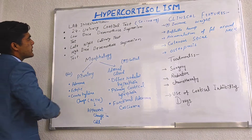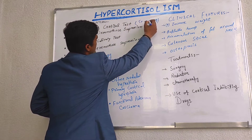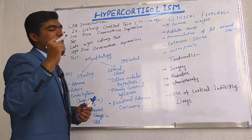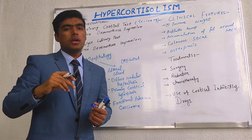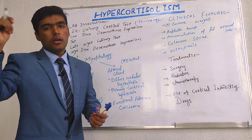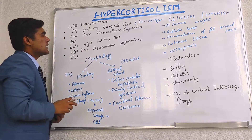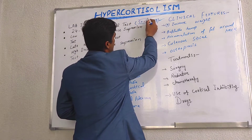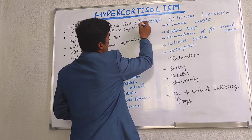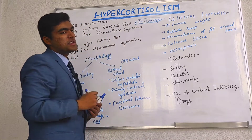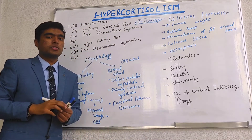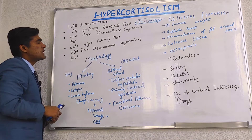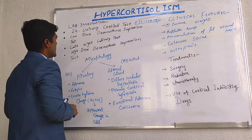The first lab investigation is the 24-hour urinary cortisol test, where we check the cortisol level throughout the course of the day. If the level is between 50 to 100 micrograms, the patient has Cushing syndrome. This test depicts the cortisol level in urine.